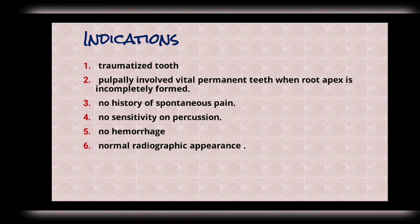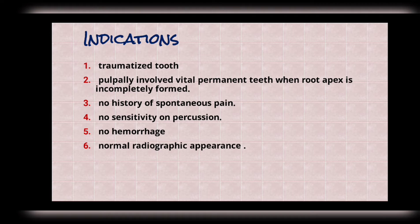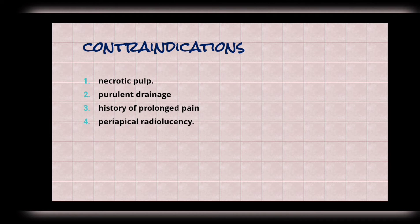When normal pulp tissue with minimal inflammation is present, normal root end development occurs. Apexogenesis can be used in a traumatized tooth, partly involved vital permanent teeth when the root apex is incompletely formed, when there is no history of spontaneous pain, no sensitivity on percussion, no hemorrhage, and normal radiographic appearance.